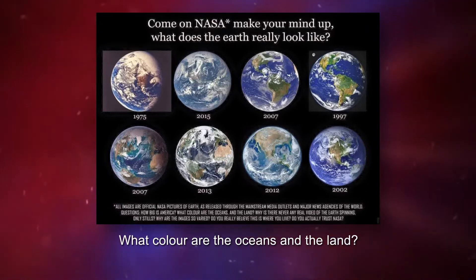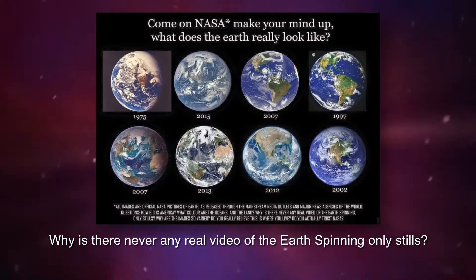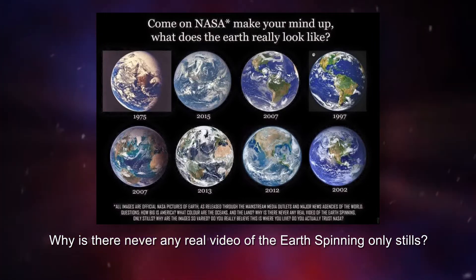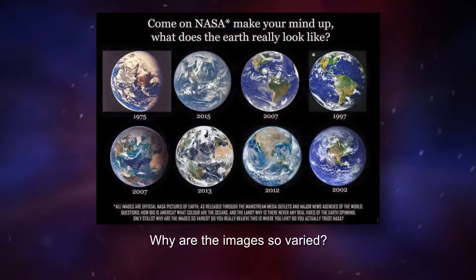What color are the oceans and the land? Why is there never any real video of the Earth spinning, only stills? Why are the images so varied?